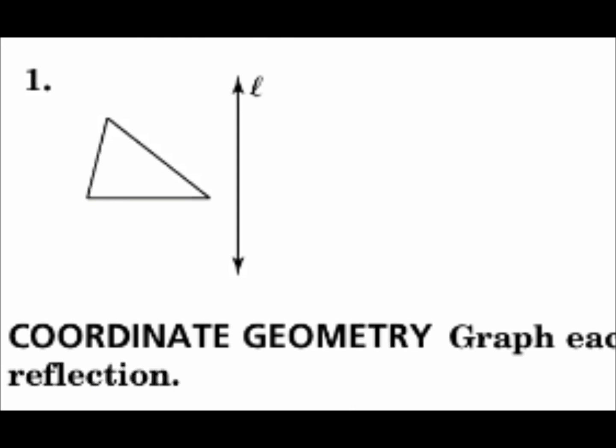You start with the pre-image. The pre-image is the old figure. The image is the new figure. Right now we have a pre-image of a triangle. The way to do reflections is to reflect the points and then connect the dots.